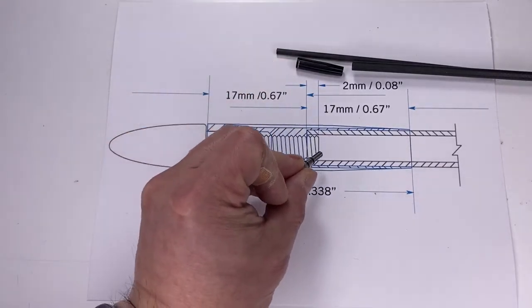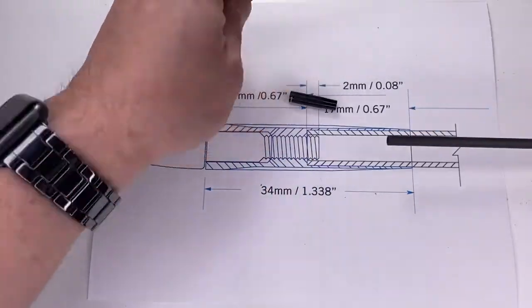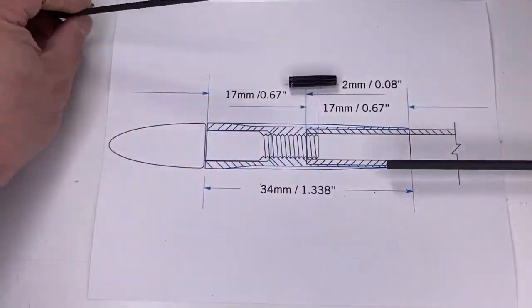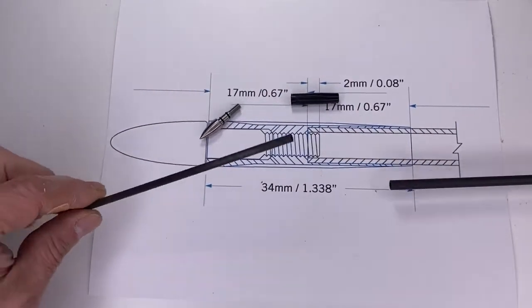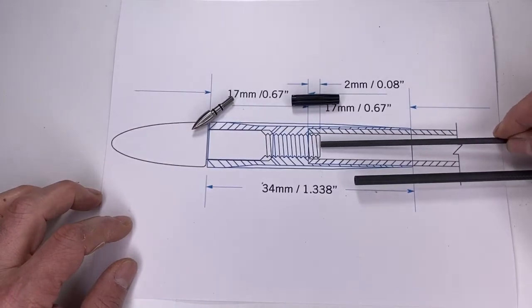When you actually glue the Arrow Outsert, before you do that, you need to glue the tubing in first. When you glue the tubing in, you want to glue the tubing so the tubing can be behind this.